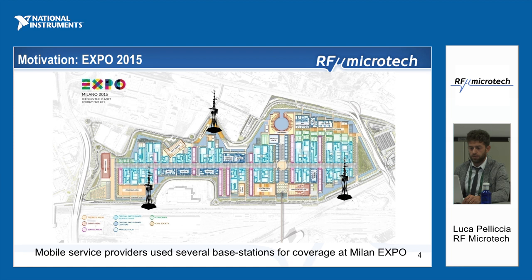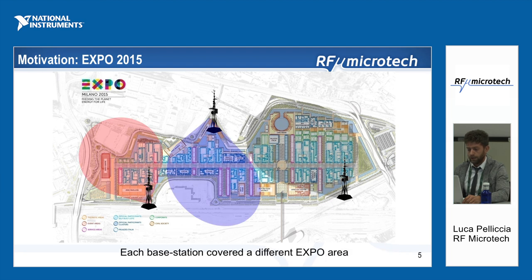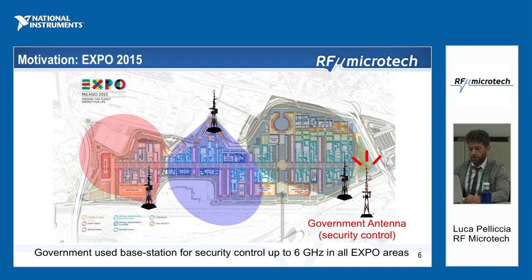The context of this project is Expo 2015 in Milan. You can see here a map of the expo. During the expo in Milan, mobile service providers used several base stations for coverage at the Milano expo, and each base station covered a different expo area. In addition, the government used a base station for security control up to C-band in all the expo areas.